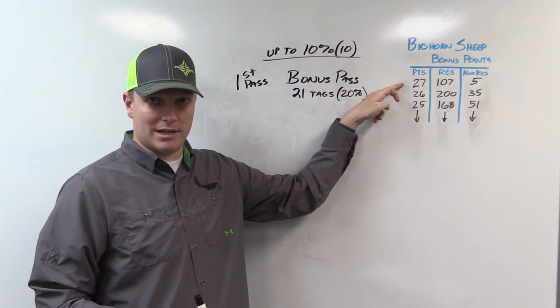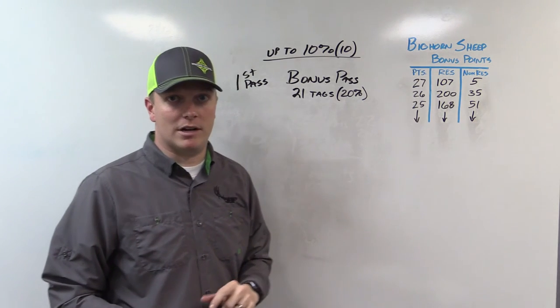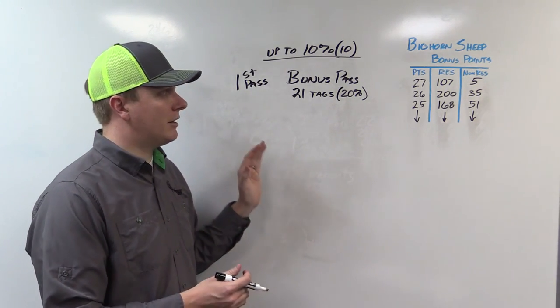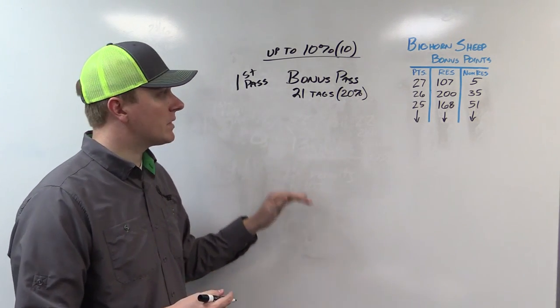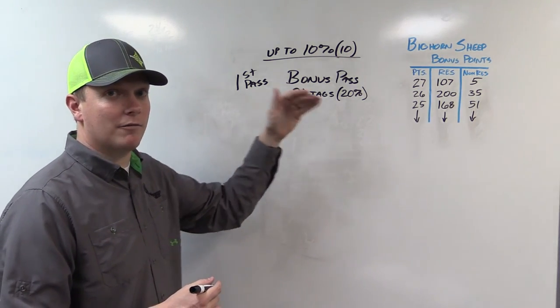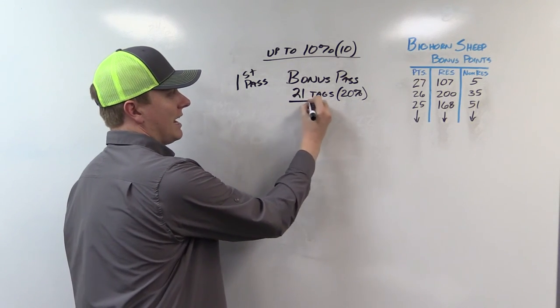So what they're going to do is they're going to look at the guys with the most points, which is our 27 point level for this year. 107 residents, 5 non-residents. They're going to randomize that pool and they're going to award the 21 lowest random numbers their tags, looking at their first and second choice pending the guy in front of them did take their choice. So they're going to give 21 tags there.